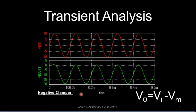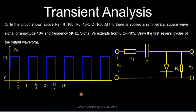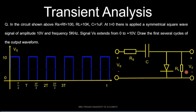Let us obtain the transient analysis for a specific problem. The circuit given is a negative clamper with a symmetrical square wave input ranging from 0 to 10 volts at a frequency of 5 kHz. The component values are Rs = 100 Ω, RL = 10 kΩ, Rf = 100 Ω (forward-biased diode resistance), and C = 1 µF. We need to find the output waveform corresponding to this input.